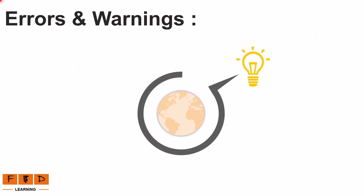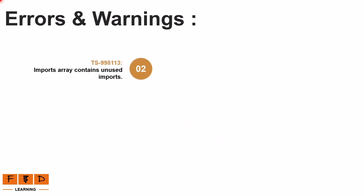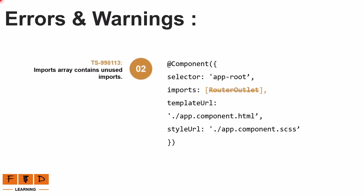Now let's move on to discuss the warning TS998113 - imports array contains unused imports. TS stands for TypeScript, so this is a TypeScript error code often encountered in Angular projects. Starting from Angular version 19, the Angular CLI will report a warning for unused imports — for example, when a module or component is in the imports array but not actually used anywhere in the application. To resolve this, simply remove the unused imports from the imports array.